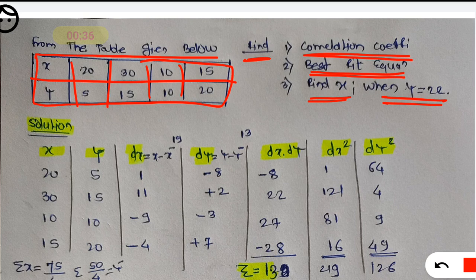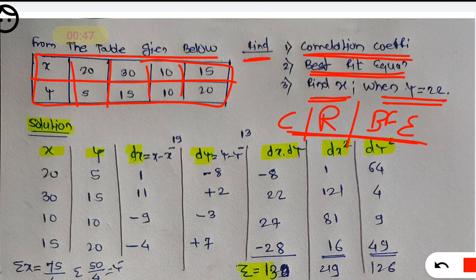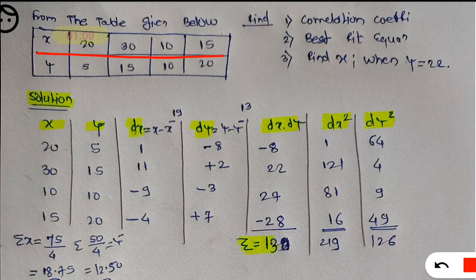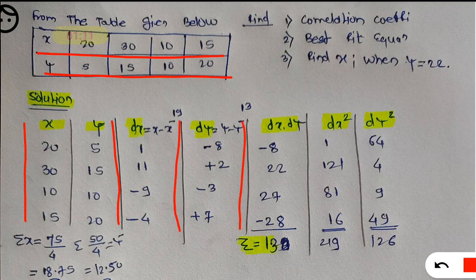When there is a problem based on either correlation, regression, or the best fit equation, you have to follow the same procedure. You have to calculate a total of seven columns. The columns required are: x, y, dx, dy, dx into dy, dx square, and dy square.